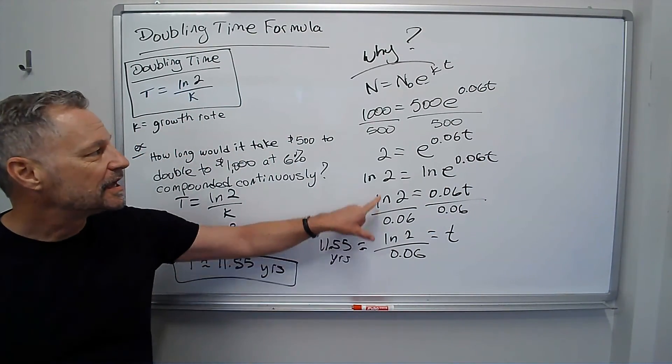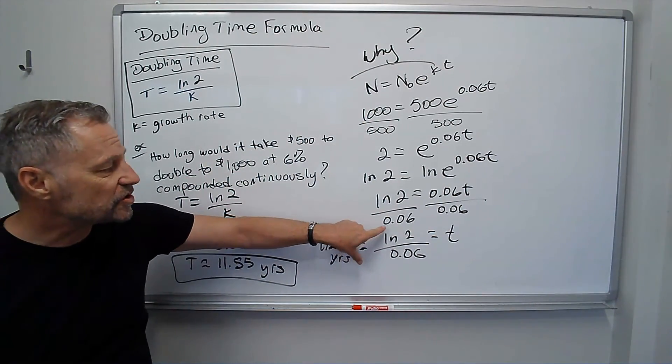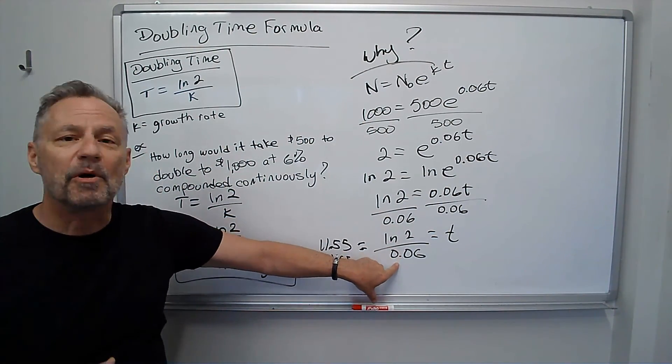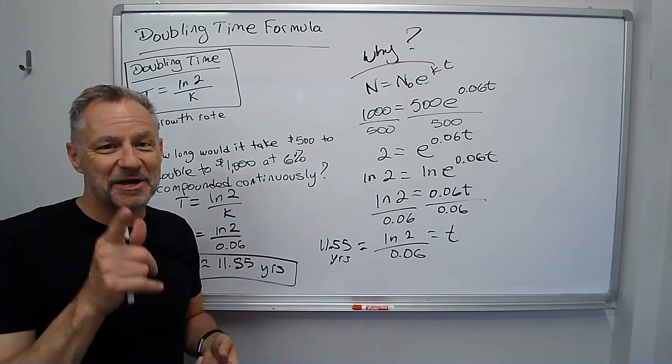But that's why the formula works. It's always doubling, so it's always a 2. We're going to take the ln, so it's always ln of 2 on the top. The bottom is always the growth rate. Simple formula. Remember it. It'll come in handy.